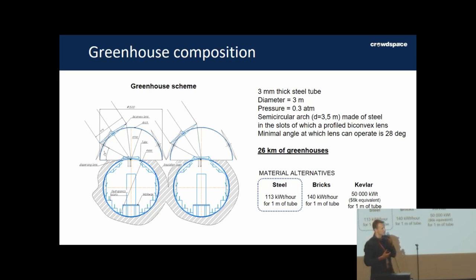We looked at different materials, and steel is the most preferable because in order to produce it we will just need 113 kilowatt hours for one meter of tube. Bricks are also good but with a bit less performance. If we want to try to use some Kevlar that we have to bring from Earth, then the cost for this will be like 40 times larger.